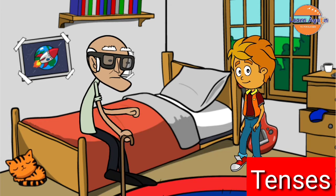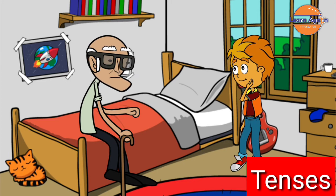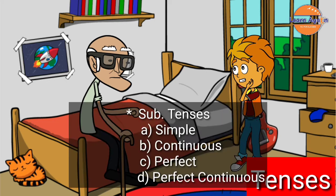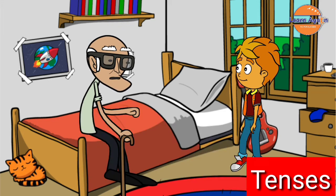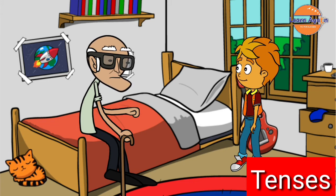Absolutely correct. Now let me know the types of present tense. There are four types of present tense: simple, continuous, perfect, and perfect continuous. But keep in mind that these types are also used in other tenses. For example, we say simple present tense, simple past tense, and simple future tense.